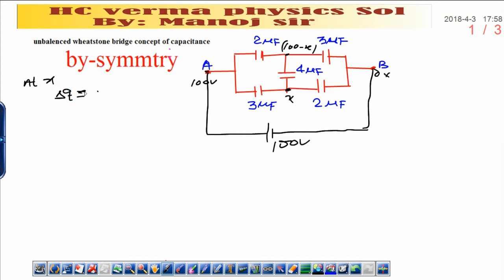Change in charge will be zero. What do you mean by it? It means at junction x, if you add all the charges, whatever charges are there across the 3 microfarad capacitor, across 2 microfarad capacitor, and across 4 microfarad capacitor, its change will be zero. Total charge is constant, constant means final and initial value will be zero.